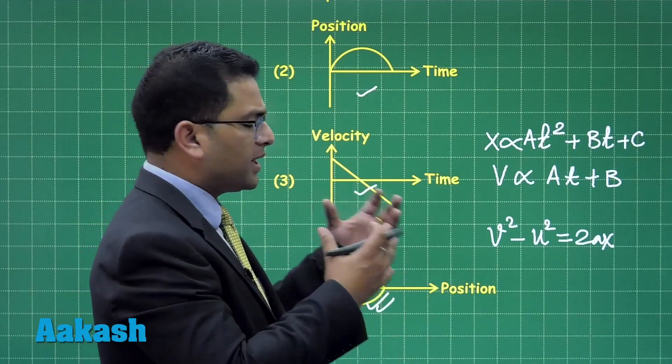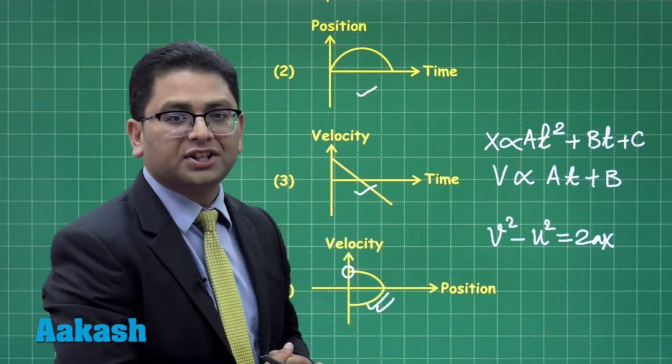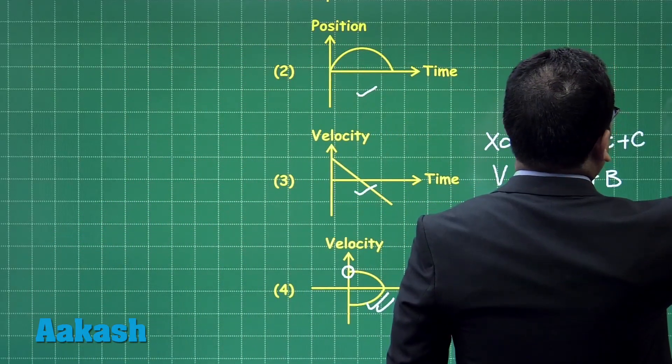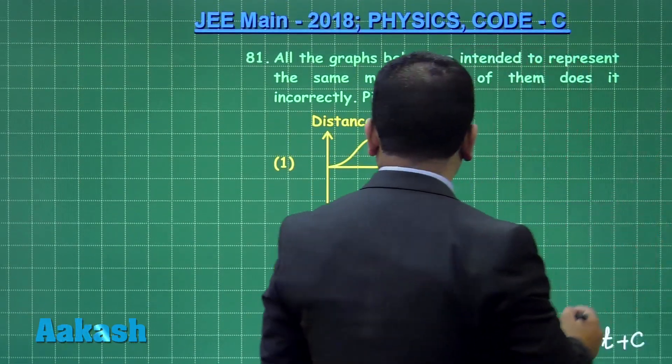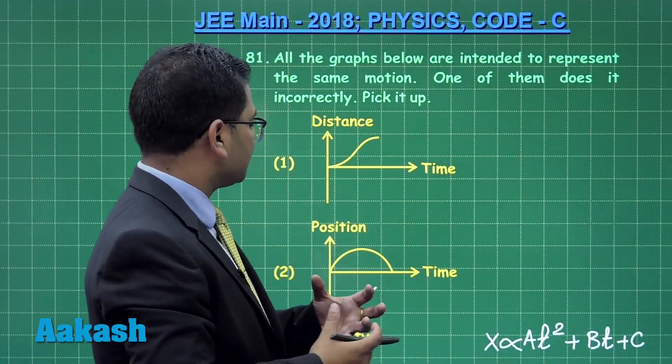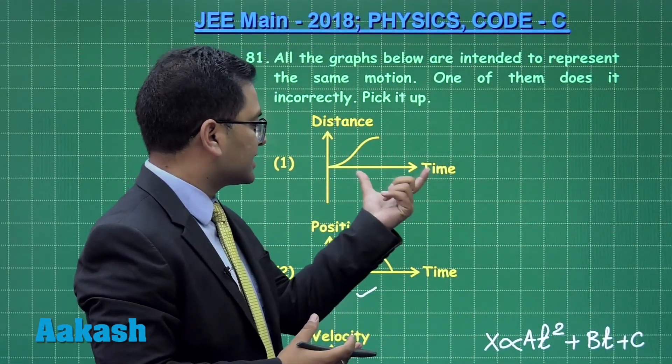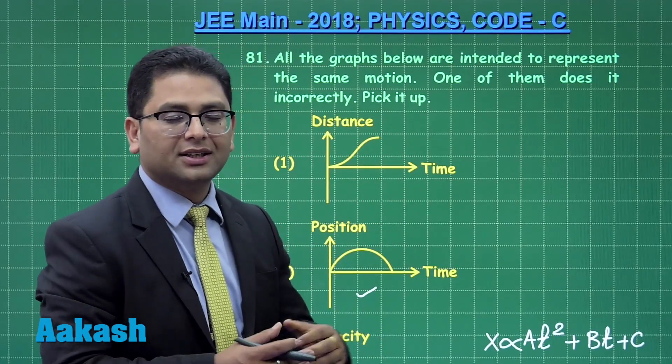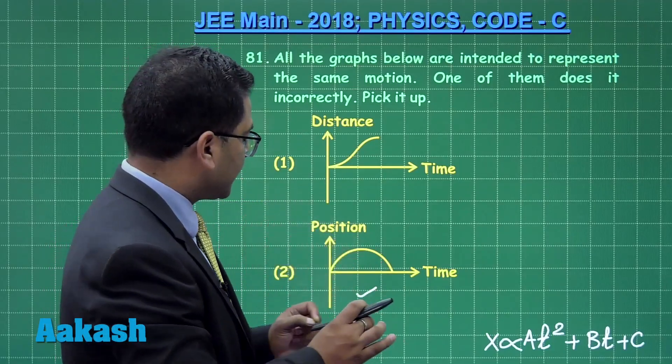So you could see even this is representing a similar motion and that could just be picked out on the basis of observation and experience. Now since three has been found out to be representing a same type of motion, the answer is already there. It has to be distance-time.